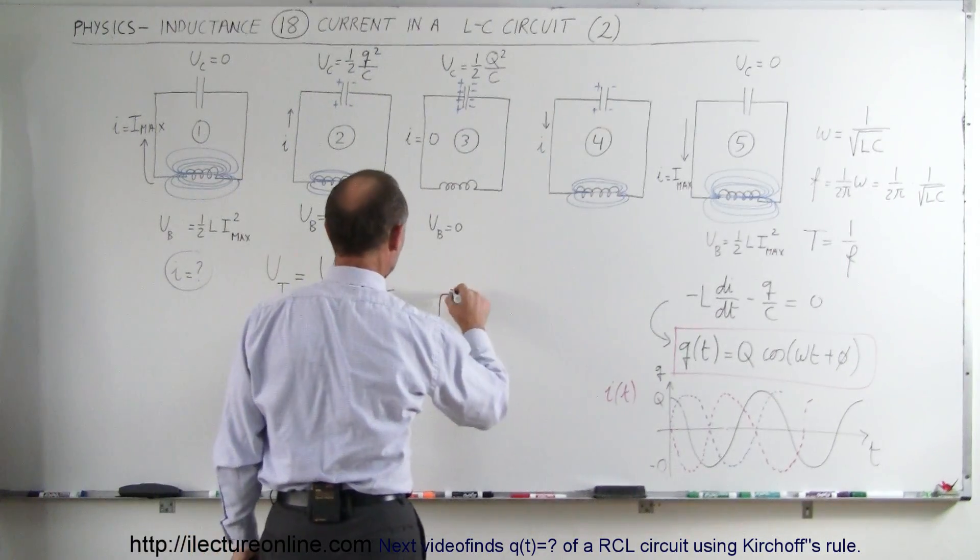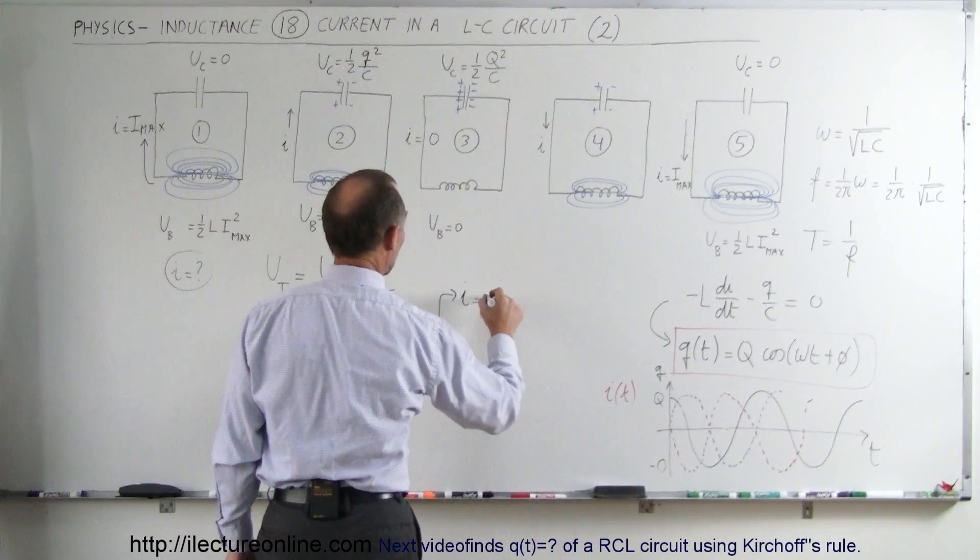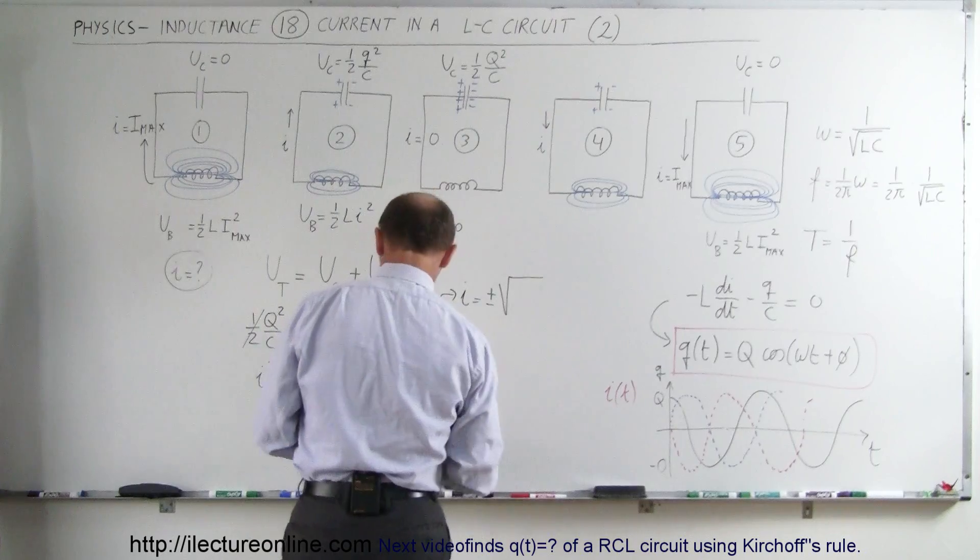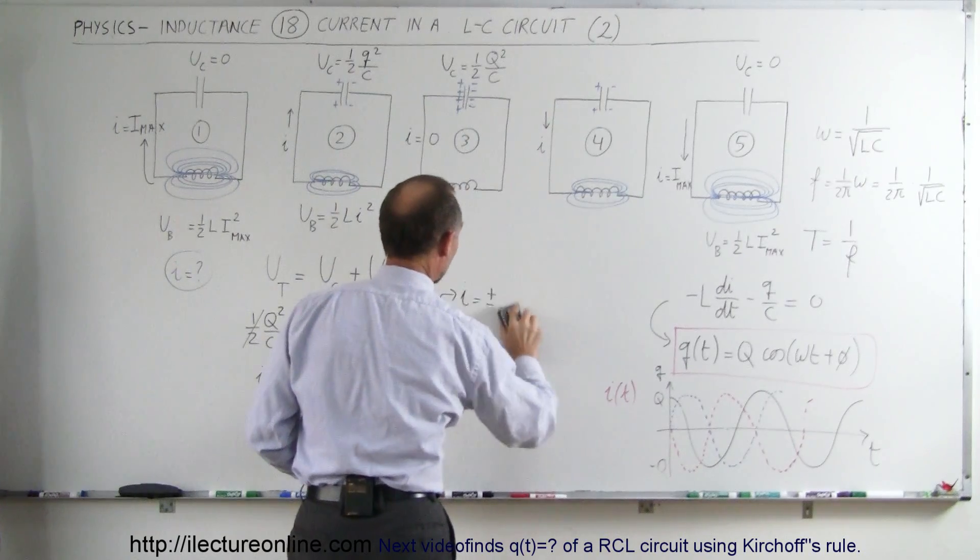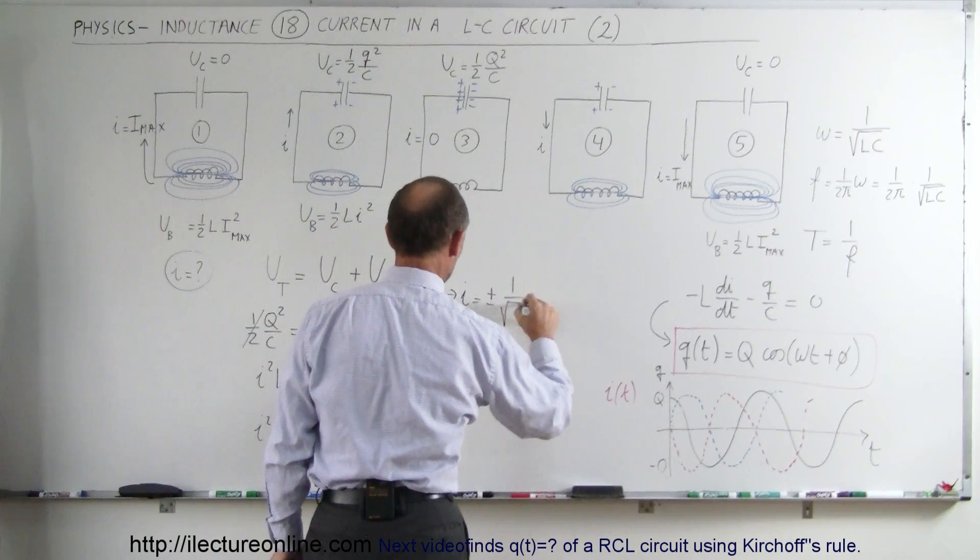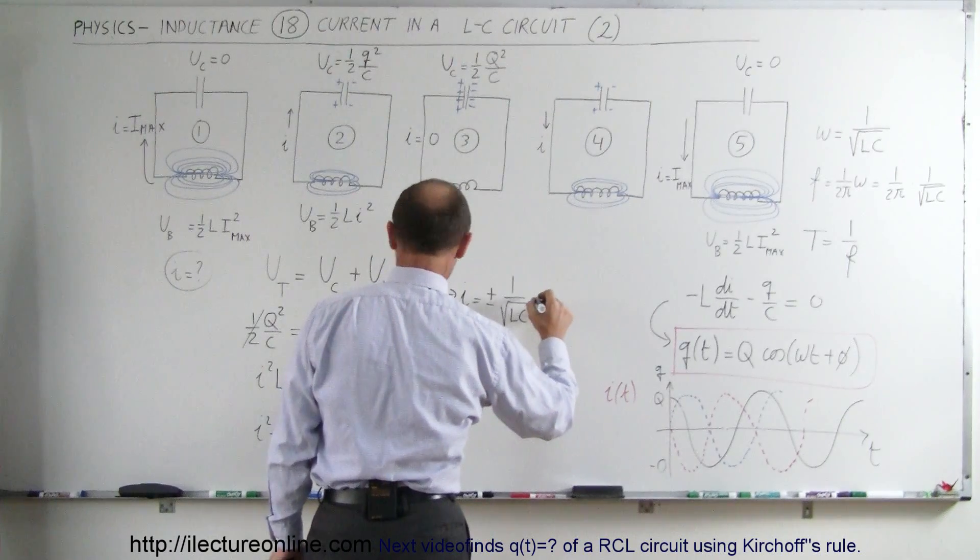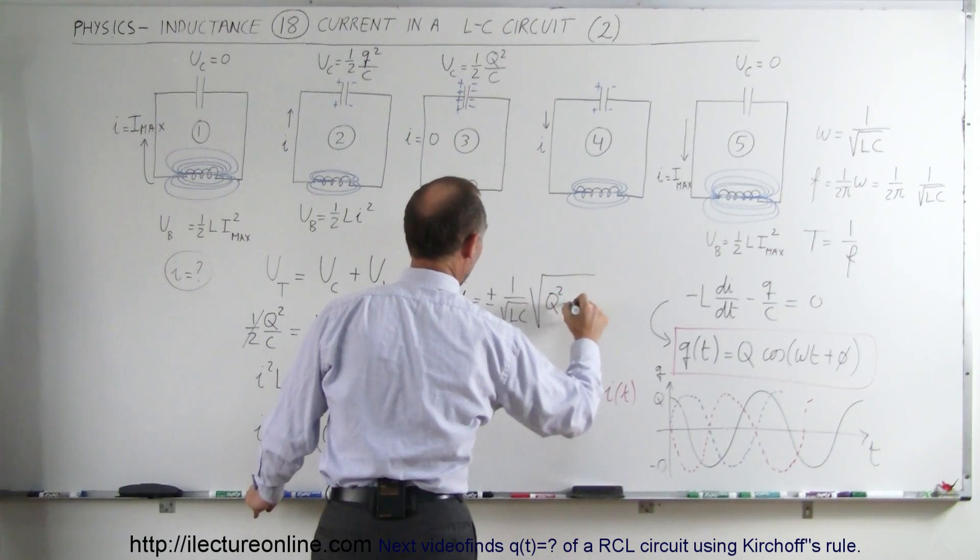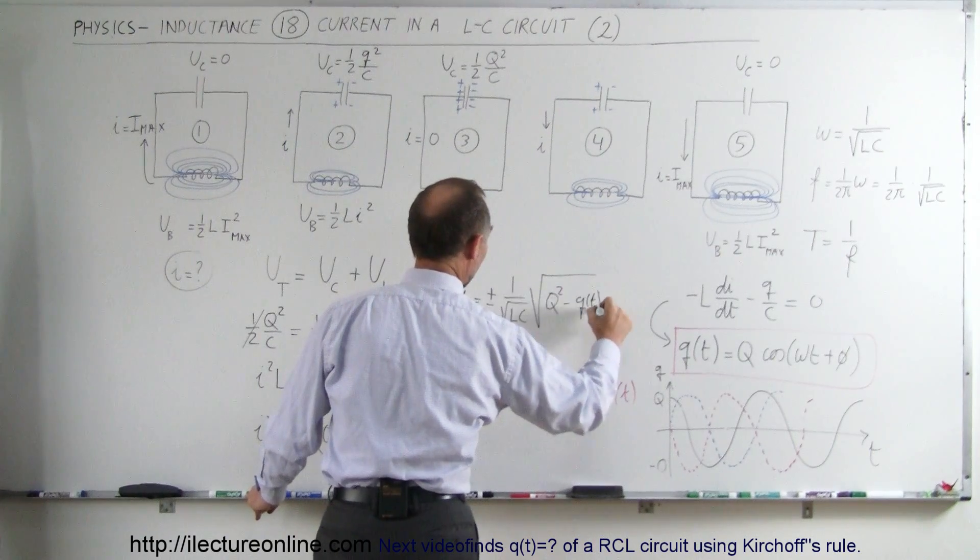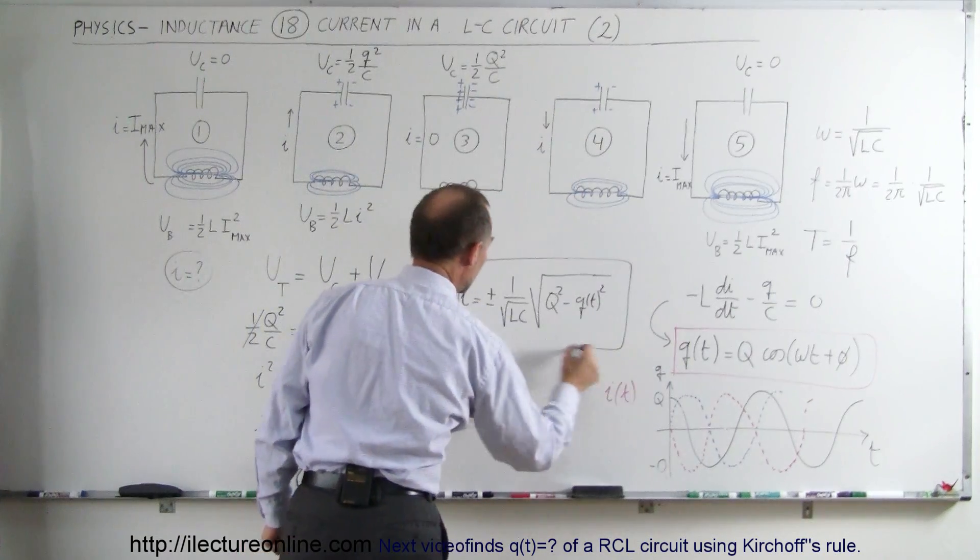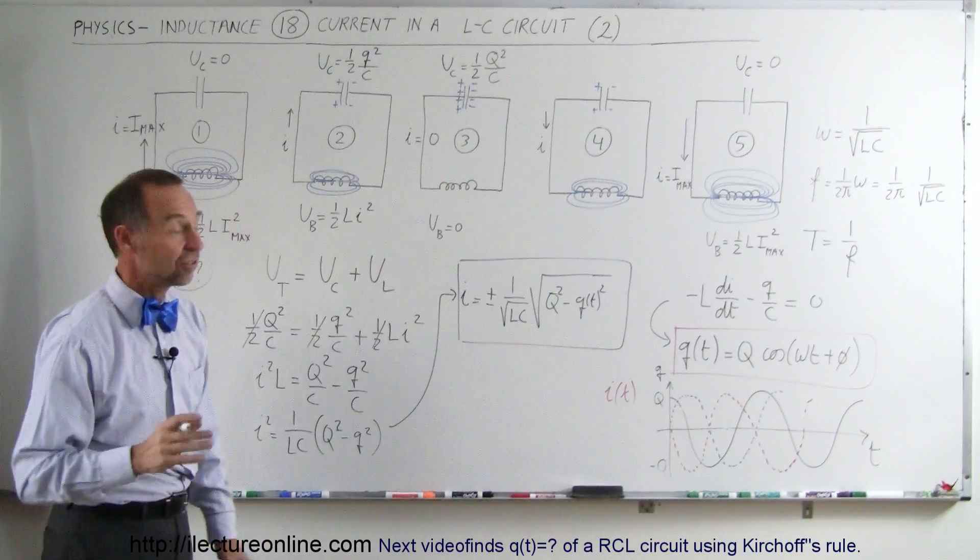So therefore from here we can say that I is equal to plus or minus the square root of, well, actually, probably want to do it like this, which is equal to 1 over the square root of L times C times the square root of Q squared minus Q as a function of time squared, like that. And that now becomes a new equation for the current in an LC circuit.